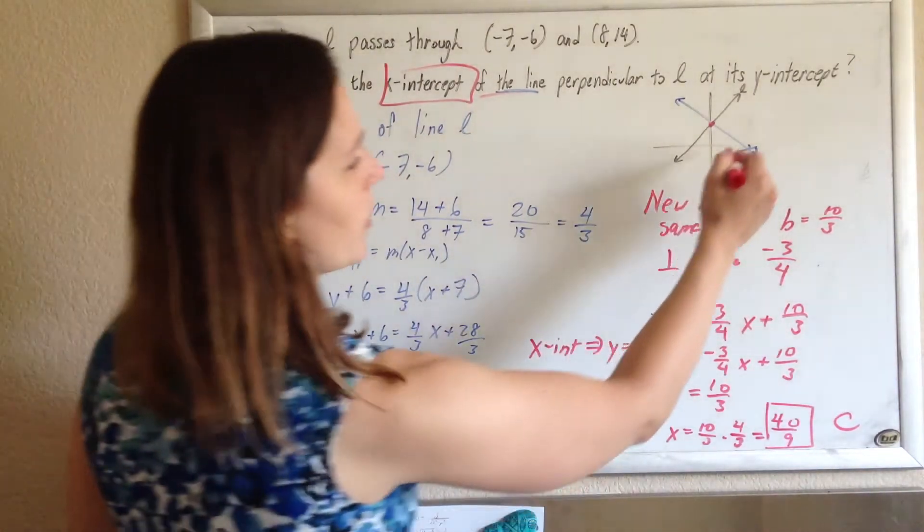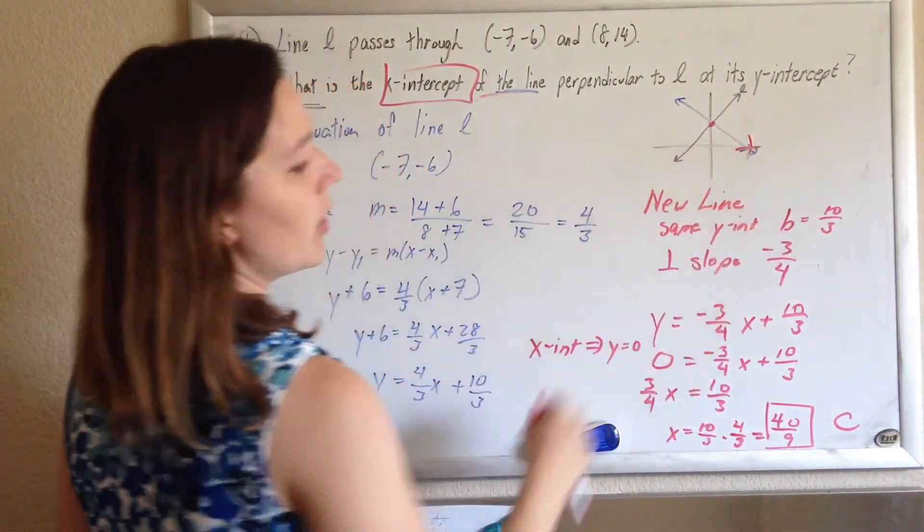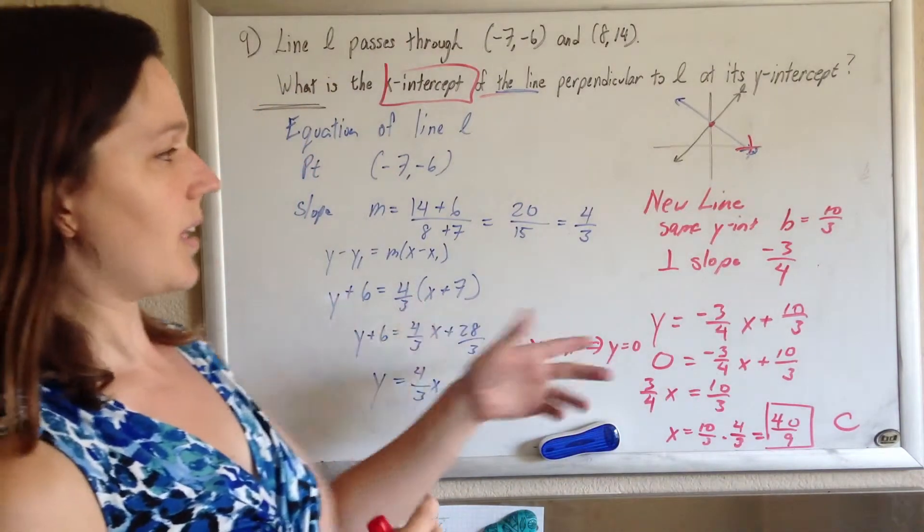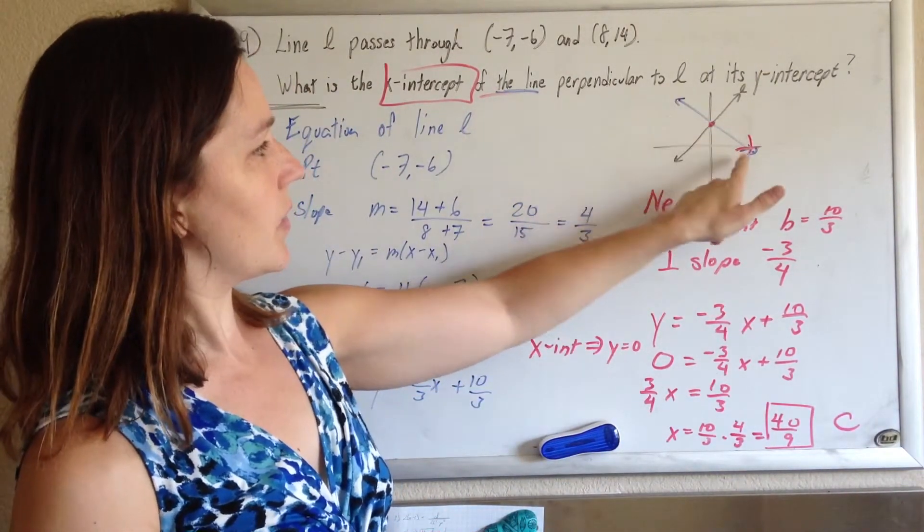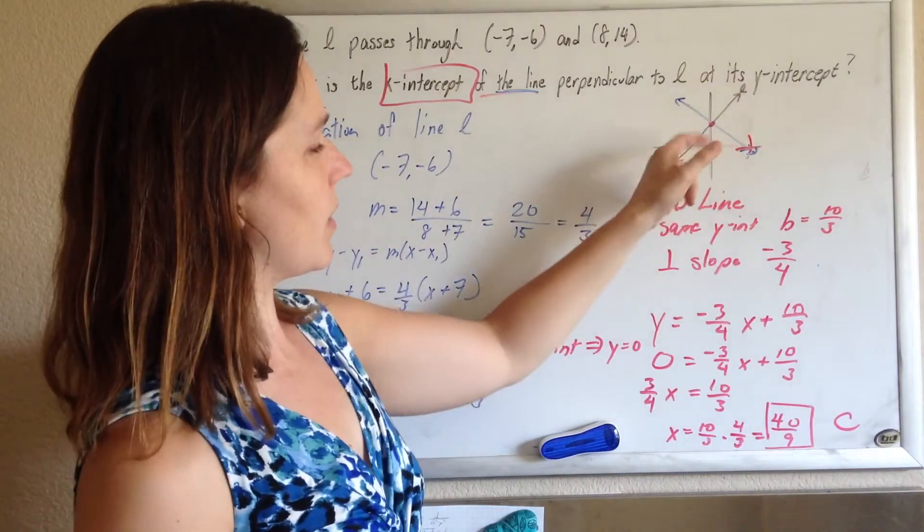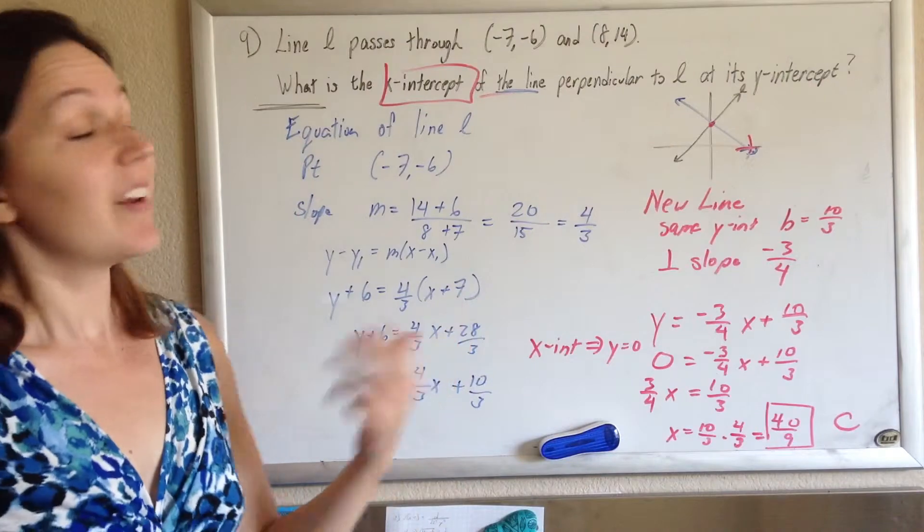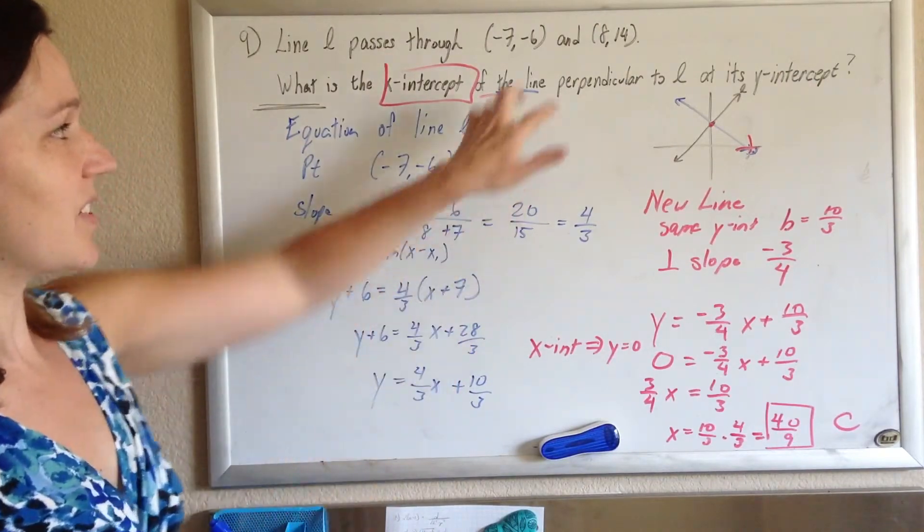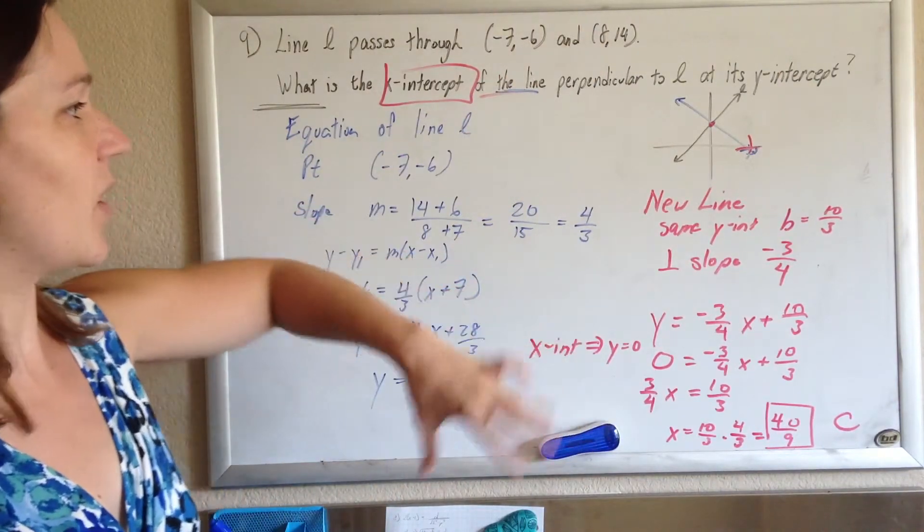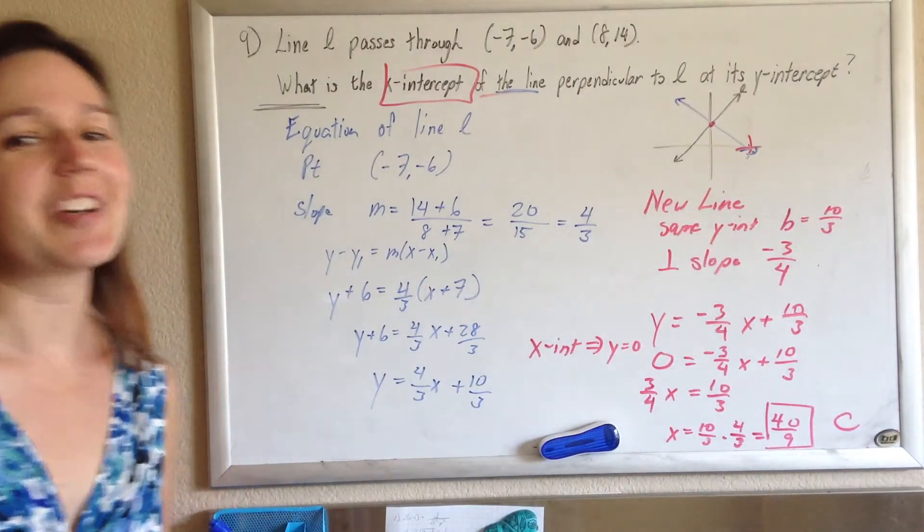So somewhere out here, at x equals 40/9, that's the x-intercept of the line that's perpendicular to line L at its y-intercept. Now, for fun, if you want to practice, go ahead, do this on graph paper. Do it all nice out, see if that makes sense. Have fun.